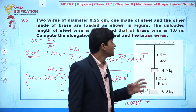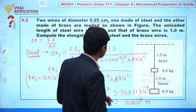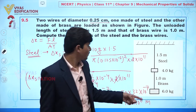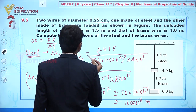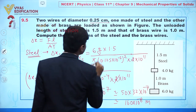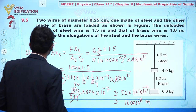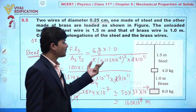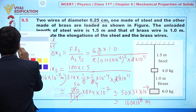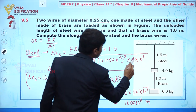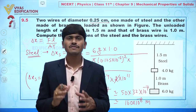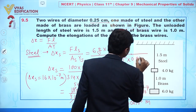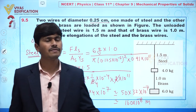Now, for the brass wire, the total mass hanging on it is only 6 kg. The length of the brass wire is 1.0 meter. The radius of the brass wire is the same as steel. The Young's modulus for brass is given as 0.91 times 10 to the power 11 Newton per meter squared — this value will be provided in the question, so there is no need to memorize it.